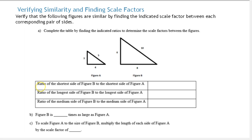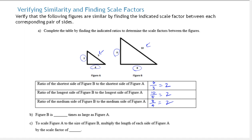First we're asked to find the ratio of the shortest side of figure B to the shortest side of figure A. This is the shortest side of figure B and this is the corresponding shortest side of figure A, so the ratio is 6 to 3, which is 2. Now we find the ratio of the longest side of figure B to the longest side of figure A — that ratio is 10 over 5, which is 2. Finally, the medium side: figure B to figure A is 8 to 4, which also simplifies to 2.